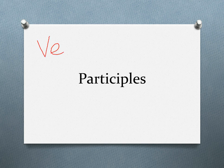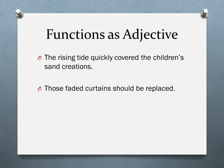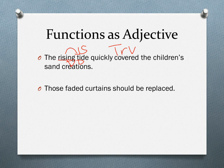A participle is a verb that is acting like an adjective. To find an adjective, we have to find the nouns it modifies. Looking at our sentence pattern: 'tide' is the subject, 'covered' is the verb, and 'creations' is our direct object, making this verb transitive. We have two nouns — subject and direct object. We have 'rising' describing 'tide,' so that's our participle.